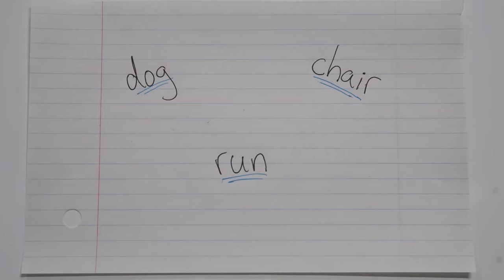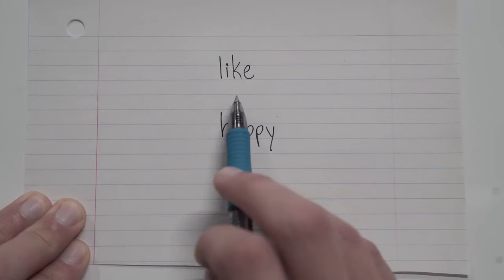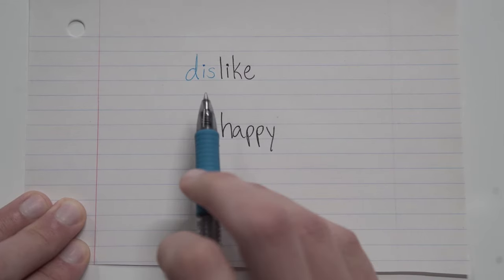Prefixes and suffixes change the meaning of the words they're attached to. For example, I could have the word like, which is a positive feeling, a positive thing. But if I add the prefix dis to it, it becomes dislike, which is the opposite. To dislike something means you have a negative feeling towards it. You don't like it.